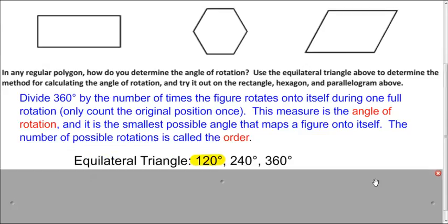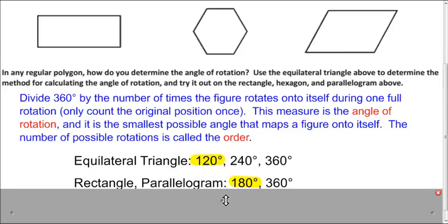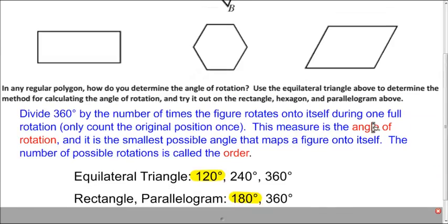And so for the equilateral triangle, these are the three different measurements that will map it onto itself that are greater than zero degrees. But the one that I highlighted is the angle of rotation, 120 degrees. For the rectangle and parallelogram, their order is 2. And similarly for the parallelogram.